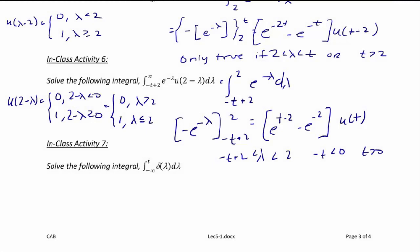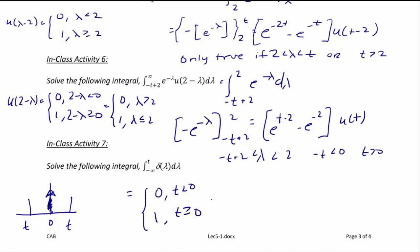Let's do the final example on page 3: solve the integral from -∞ to t of δ(λ) dλ. The impulse function is at time 0. When you integrate over the impulse function, the area under the curve is 1; if you don't integrate over it, it's 0. So if t is to the left of the impulse, the result is 0; if t is to the right, it's 1. This gives 0 for t < 0 and 1 for t ≥ 0, confirming that the integral of an impulse function yields the step function u(t).